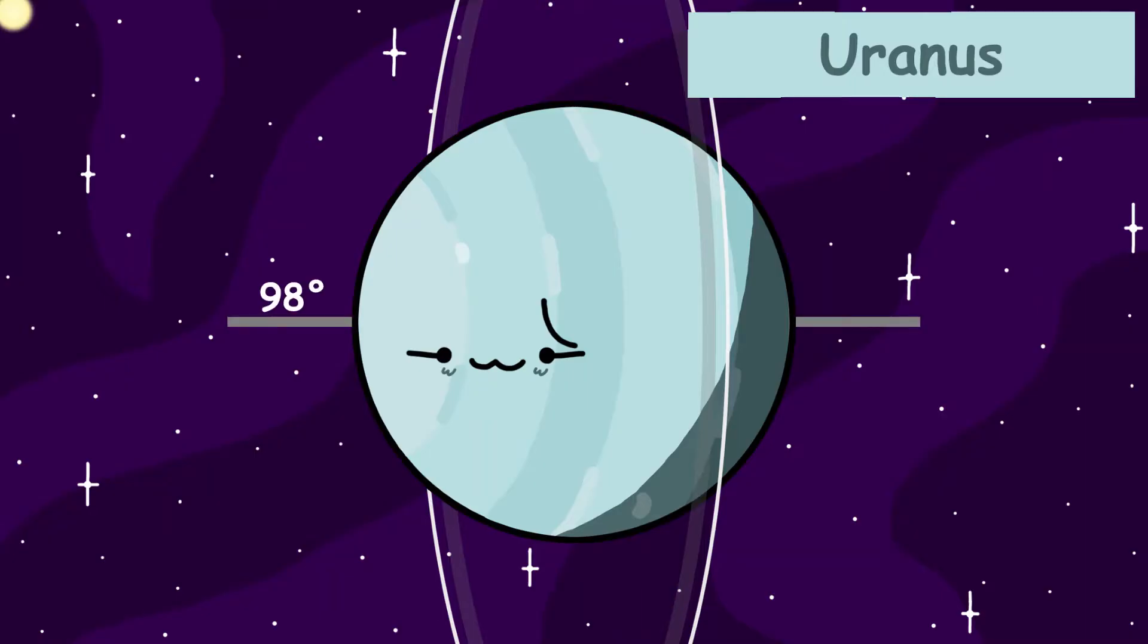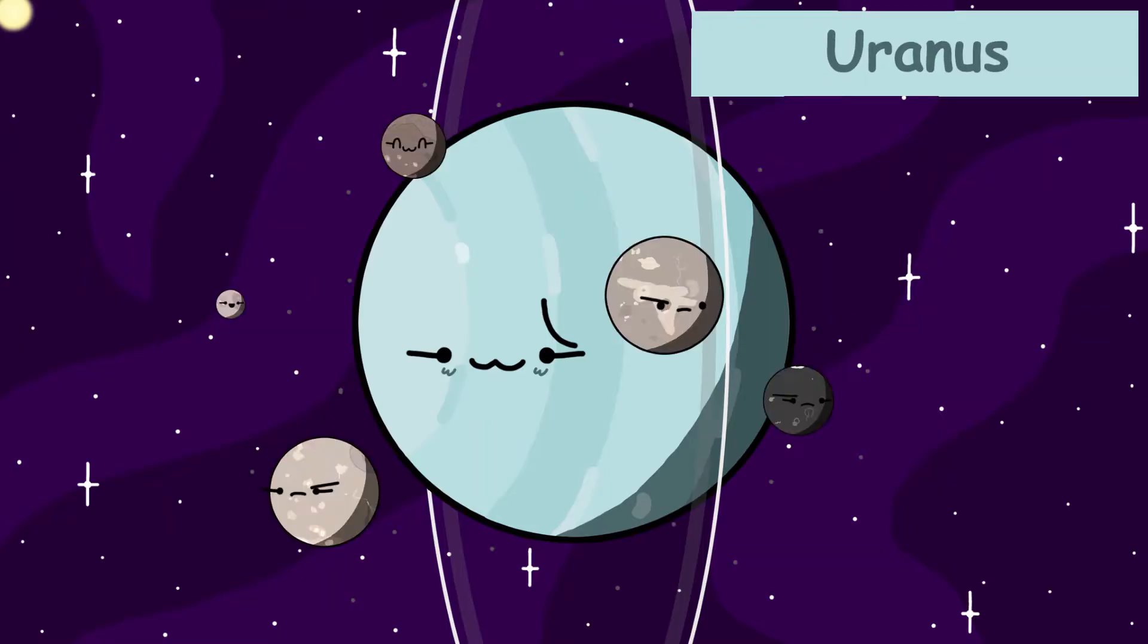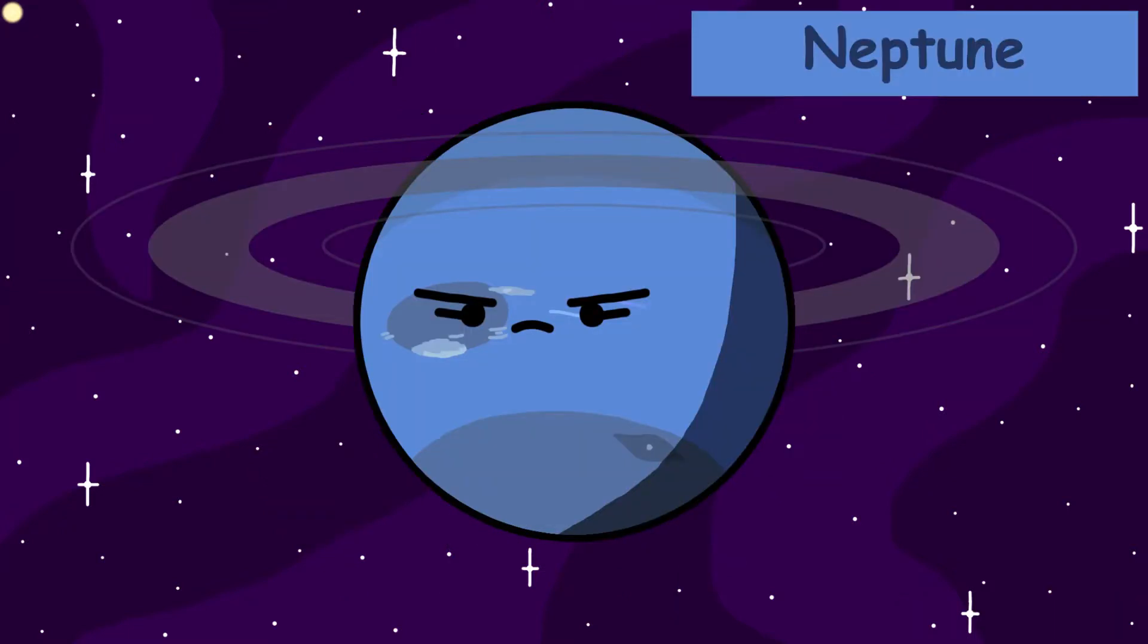Uranus actually has an axial tilt of 98 degrees. Even its rings and moons' orbits follow this axial tilt. Uranus has 27 moons. After Uranus, we have Neptune.